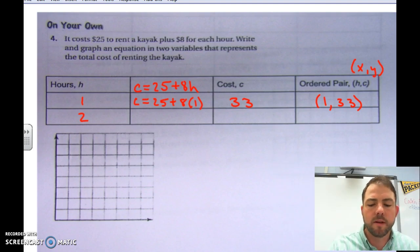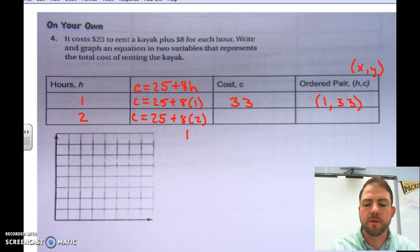Now, if we want to rent the kayak for two hours, 25 plus 8 times 2. 8 times 2 is 16. So, now, it would cost us $41. So, I have two hours and $41.